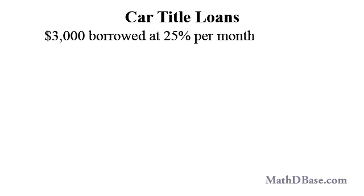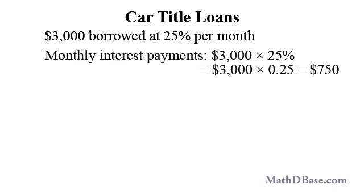If Ruby borrows $3,000 at 25% per month, how much are her interest payments? How much will she pay out if she pays off the loan in a year, and how does it compare with the amount borrowed? With an interest rate of 25%, $3,000 divided by 4, or $750, is due every 30 days. Every 4 months, an amount equal to the amount she borrowed will be paid in interest.